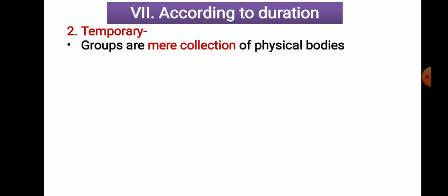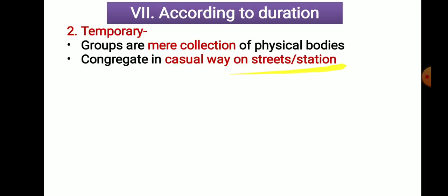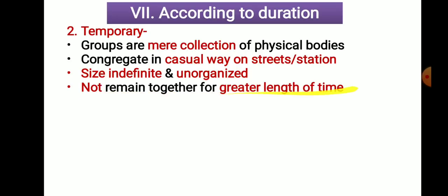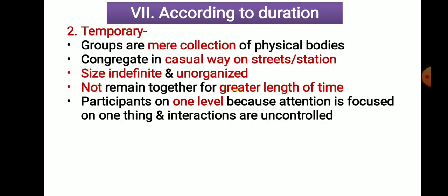The second type is temporary — for a short period of time. The group is a mere collection of physical bodies. There might be two people, a hundred, or a thousand. The people congregate in a casual way — for example, on a street or at a station. If there is an accident, people immediately gather together on the street. The size is indefinite and unorganized — there are no definite objectives. Once the objective is achieved, they leave the group. It does not remain together for a greater length of time.